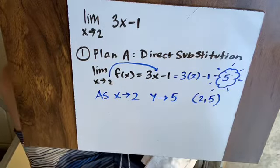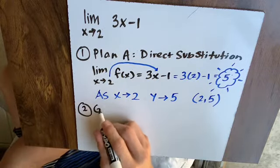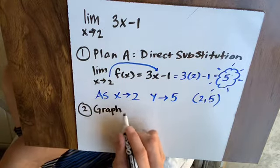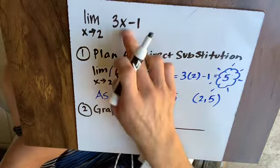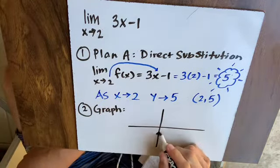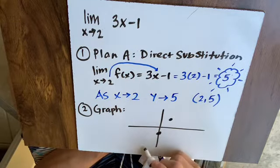So our second plan would be to graph it. And you can see the graph should confirm what we're talking about. Well, the function is 3x minus 1, y-intercept of negative 1, slope of up 3 over 1.